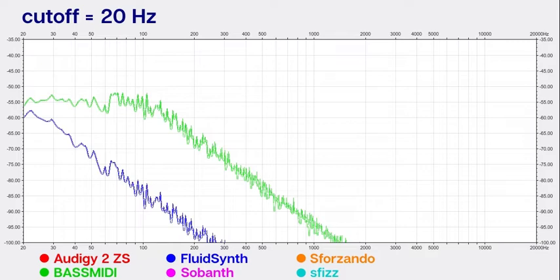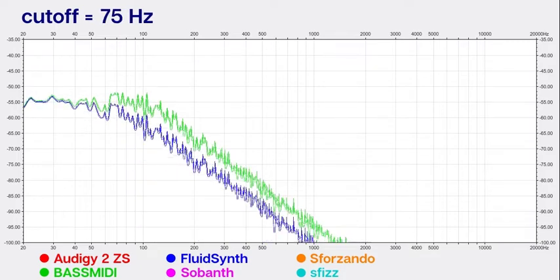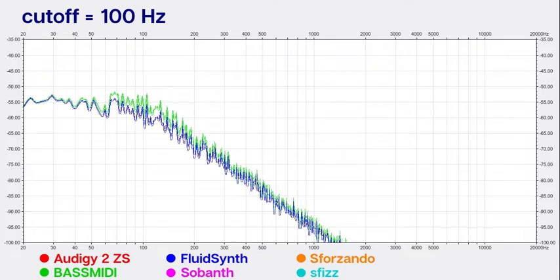So I will go ahead and move this up to 100 here, and you will see that at 100 the filters are pretty similar. Once again, FluidSynth rounds off a little bit at the cutoff point more so than BASSMIDI or SFZ.